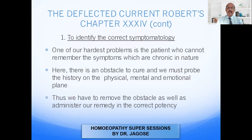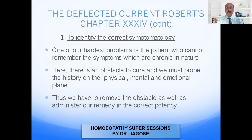The first point is to identify the correct symptomatology. One of the hardest problems is the patient who cannot remember symptoms which are chronic in nature. If a person has a chronic disease, it may span a number of years or months. If you ask him what the exact symptoms were when the disease started, and the disease has been long-standing — say five or ten years — he will not be able to remember the symptoms present right in the beginning.